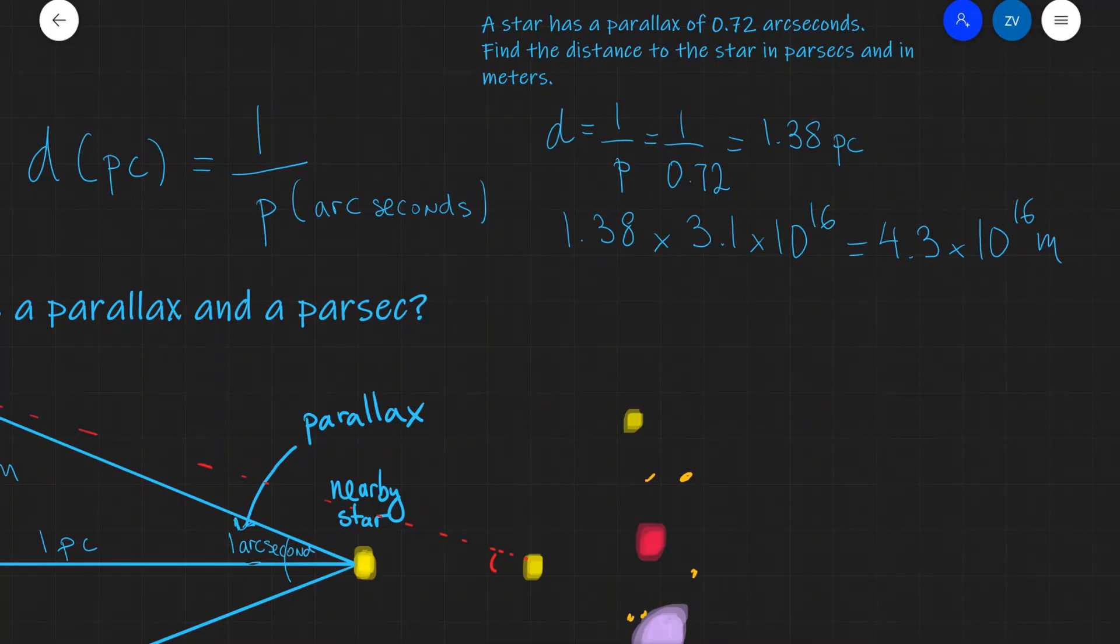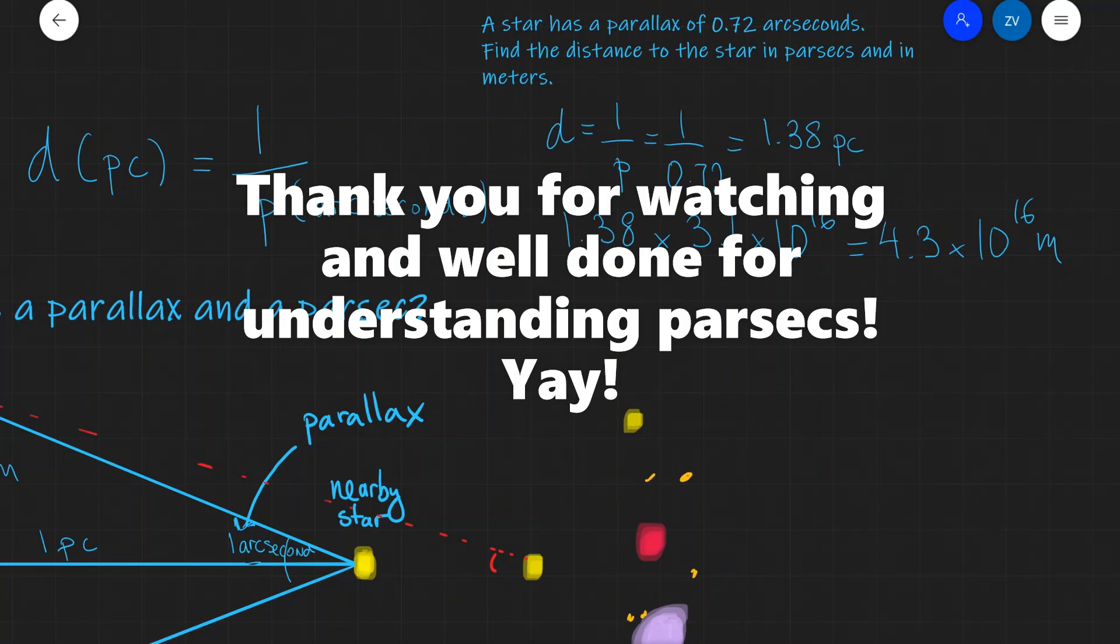Okay, folks, this was quite a long online lesson about parsecs, parallax, and d is equal to 1 over p. So, hopefully, this makes sense. If there are any questions about this online lesson, do leave a comment. And thank you very much for watching, and I hope this was useful.